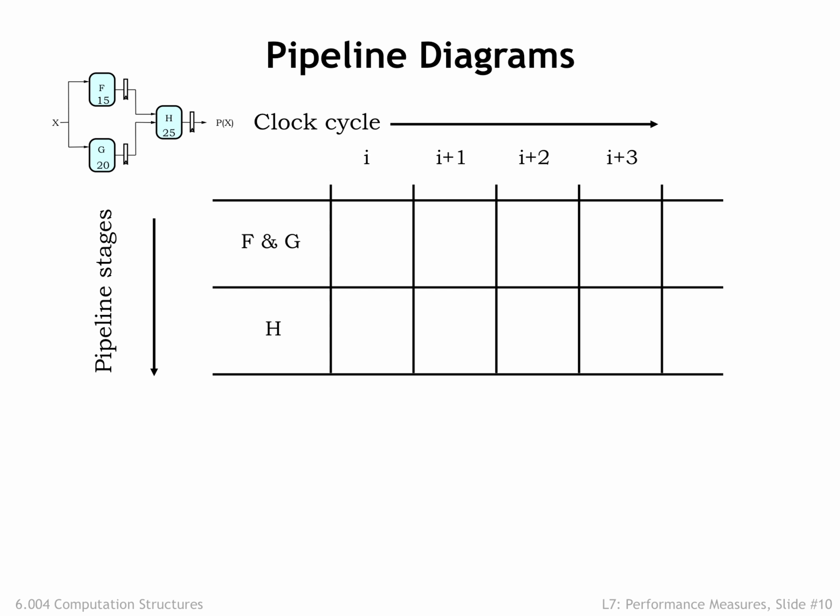Pipeline diagrams help us visualize the operation of a pipeline system. The rows of the pipeline diagram represent the pipeline stages, and the columns are successive clock cycles. At the beginning of clock cycle i, the input x_i becomes stable and valid. Then during clock cycle i, the F and G modules process that input, and at the end of the cycle, the results F(x_i) and G(x_i) are captured by the pipeline registers between the first and second stages.